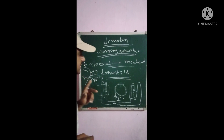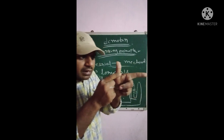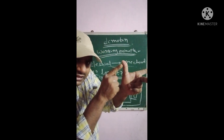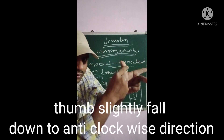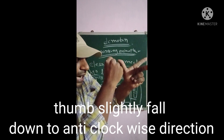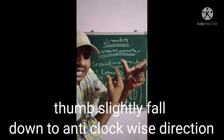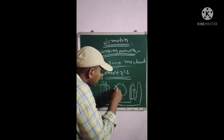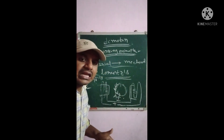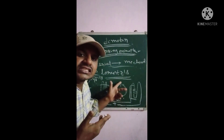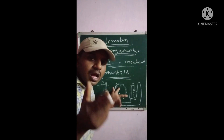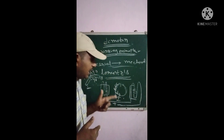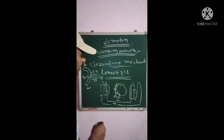When force exists, if you observe the thumb it is pointing in the anti-clockwise direction. That is why the rotation of the rotor is in the anti-clockwise direction. Fleming's left-hand rule tells us that the direction of the rotor of the motor is rotating in the anti-clockwise direction.